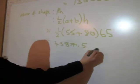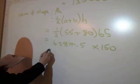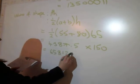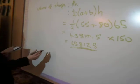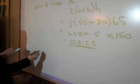We then multiply it by 150 to get the whole volume of the shape, which is 658,125. We then take away the 135,000 pi from 658,125.